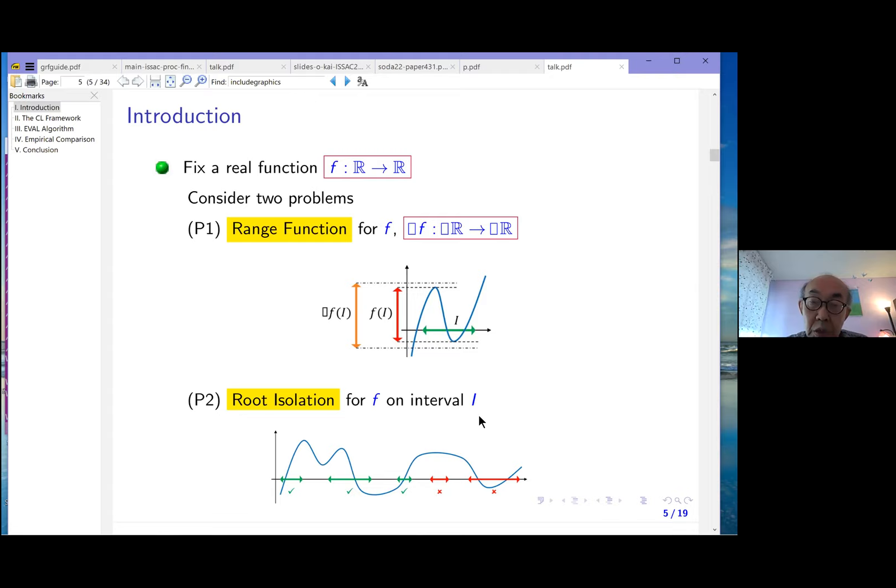By finding all the roots, I mean for each root in the interval I, I want to find an isolating interval, meaning the interval should contain exactly one root. For instance, on the left here, the first green interval contains one root, that's a good isolating interval. The second one is also an isolating interval. The third one is also good. The fourth one, the red interval, contains no root, so that's no good. The fifth one contains two roots, so it's also not an isolating interval.